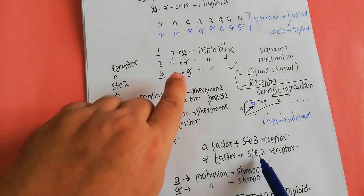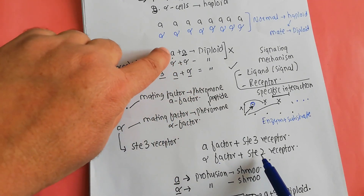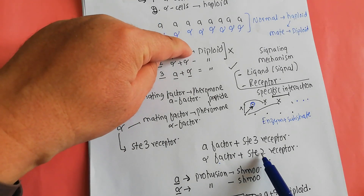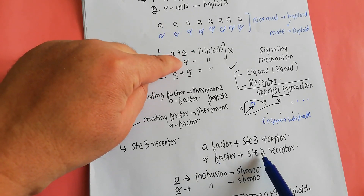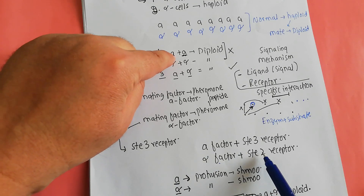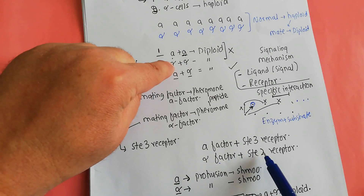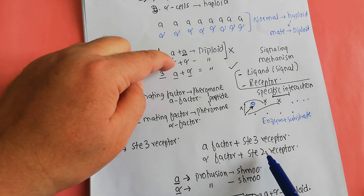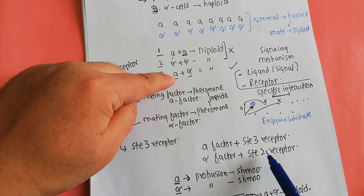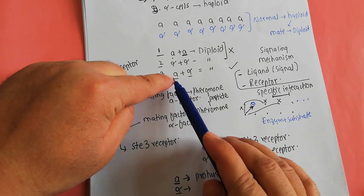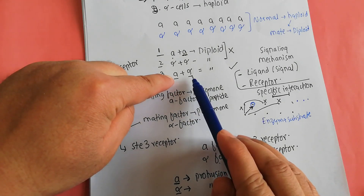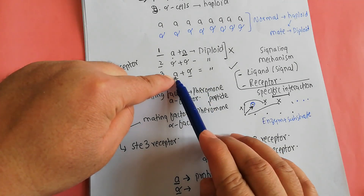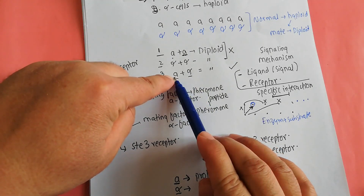That is why only an A cell can interact with an alpha cell. If you have two A cells, the A cell produces a pheromone but finds no receptor for interaction on the other A cell, so no cellular response is produced. The same applies to two alpha cells — if there is no receptor, there is no interaction. However, when an A cell and an alpha cell are present, the A cell pheromone interacts with the SDE3 receptor on the alpha cell, and the alpha-factor interacts with the SDE2 receptor on the A cell, because those receptors are present.